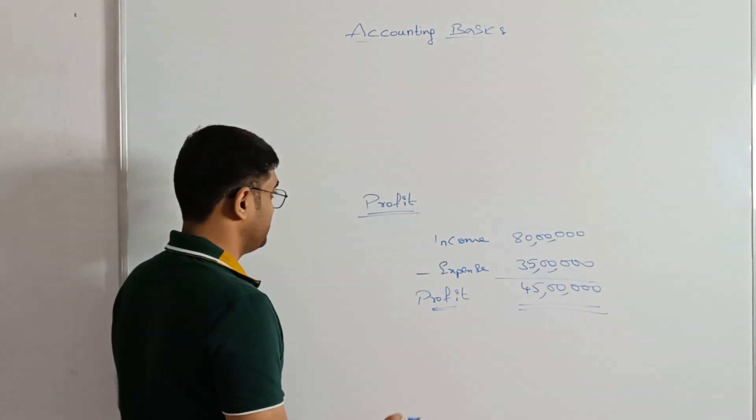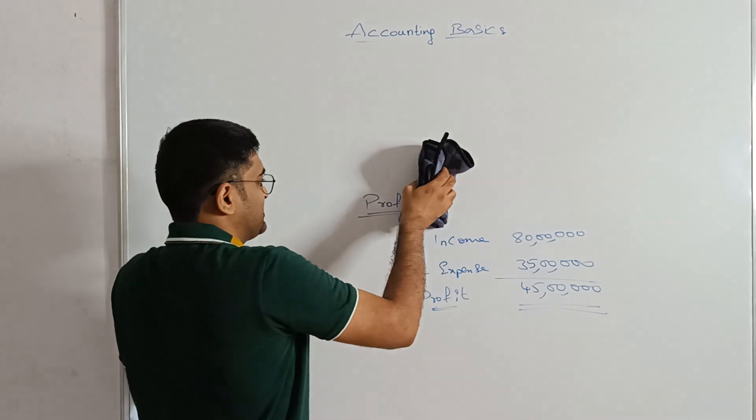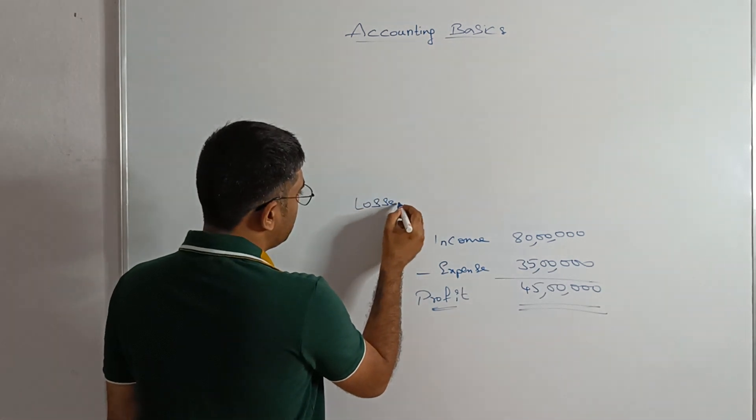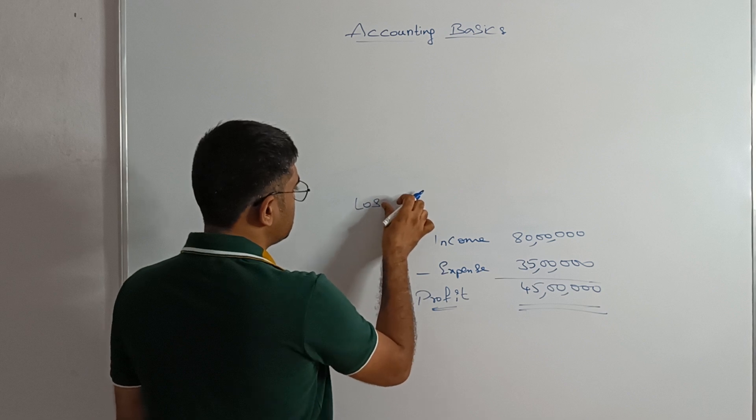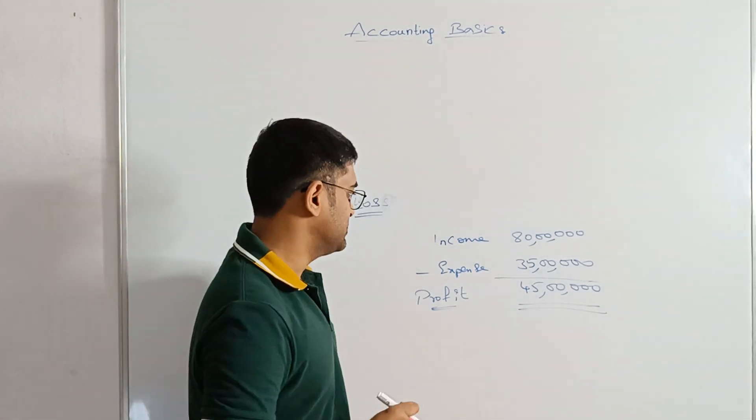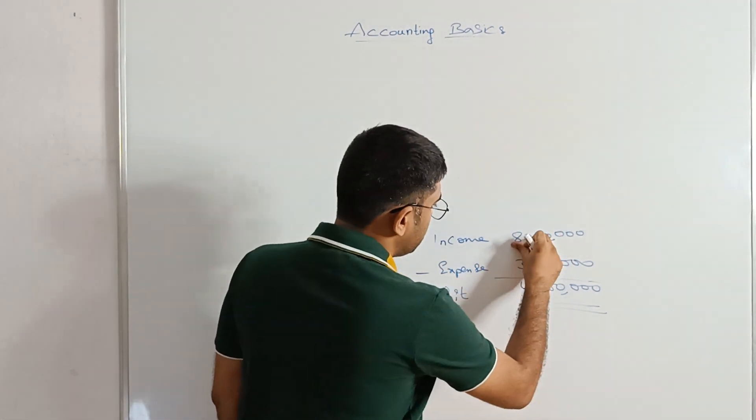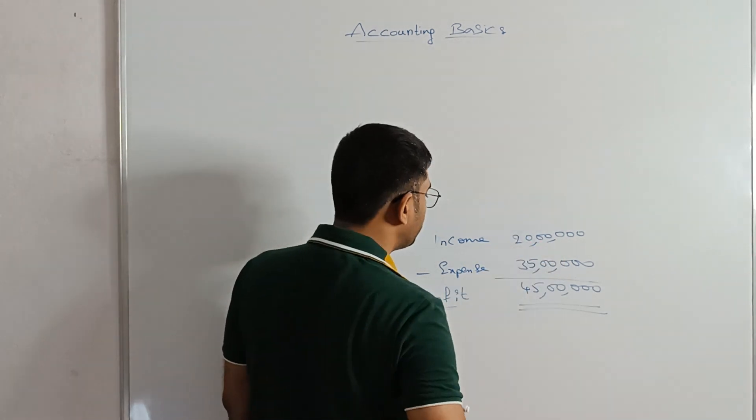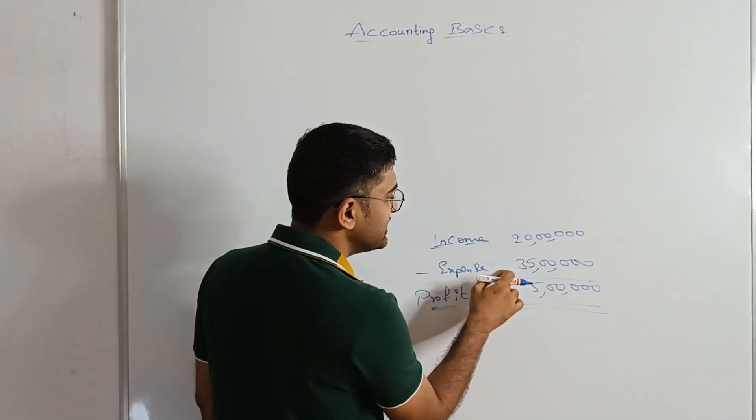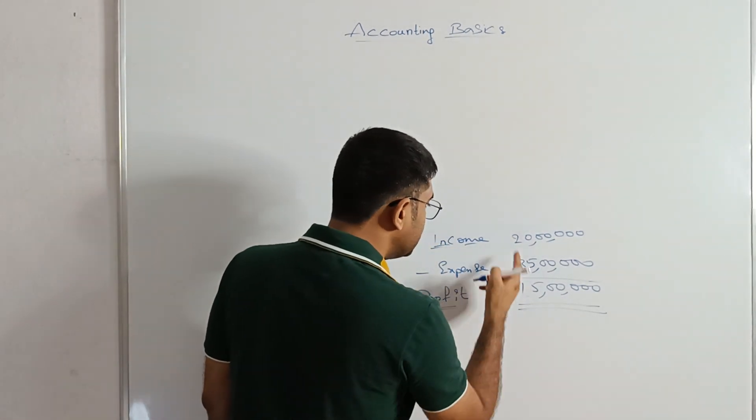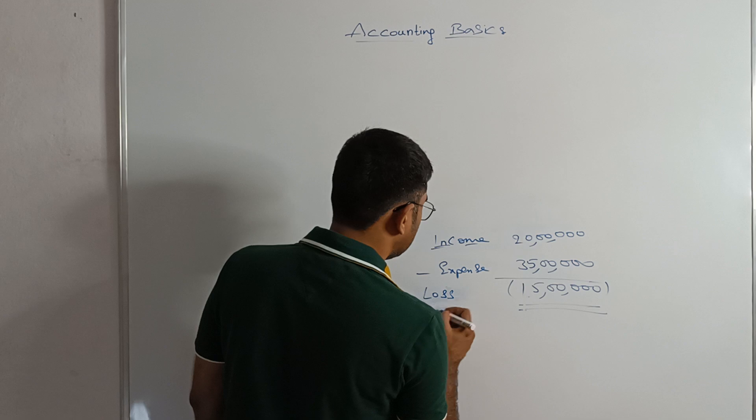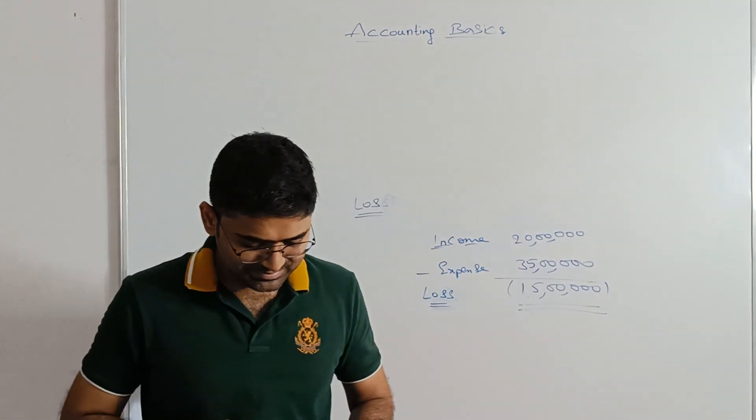The next topic is a little different, loss. Sometimes people won't be able to do their business good. So they may end up in loss. Loss is nothing but if the income earned is less than the expenditure then it is considered as loss. In the same example, say for example, I have received only 20 lakh rupees as an income from services. But I spent 35 lakh rupees as the expenditure. So your expenditure is more than your income. So then the difference between these two now it is going to be a negative figure. So the negative figure we call it as loss. Clear?